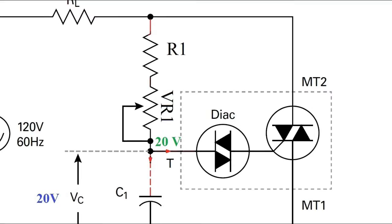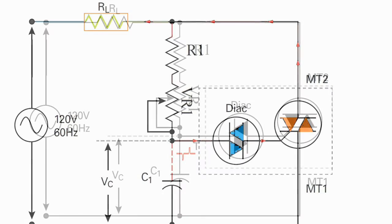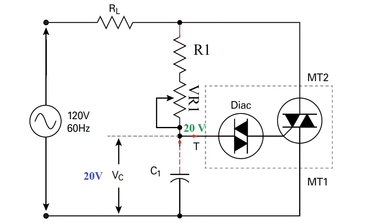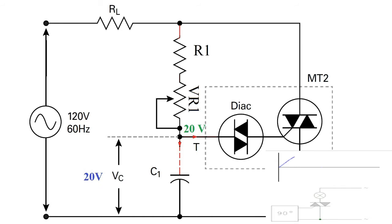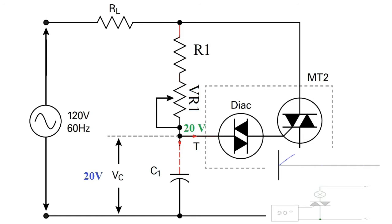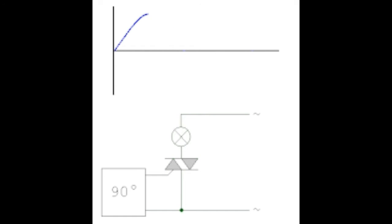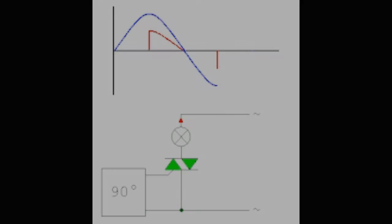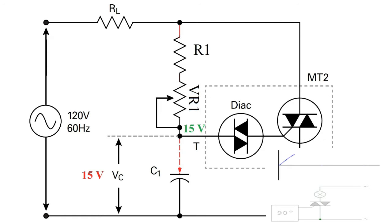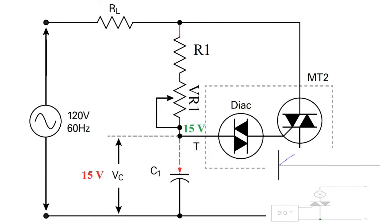When the triac fires and enters conduction, a transient current flows through it while the RC voltage is limited by the on-voltage of the triac, remaining at the same value until the end of the half cycle. At the end of each half cycle, the source voltage reduces to zero, causing the current through the triac to drop below the holding current IH, and the triac turns off. The source voltage then enters the next half wave, the capacitor voltage starts to rise again in the opposite direction, and the triac firing cycle repeats.